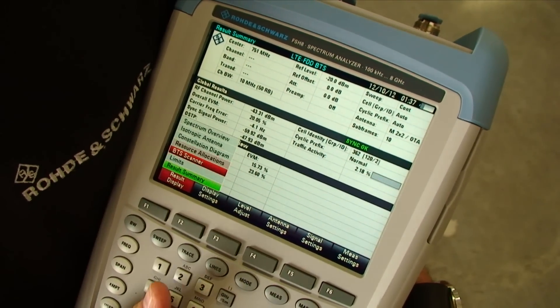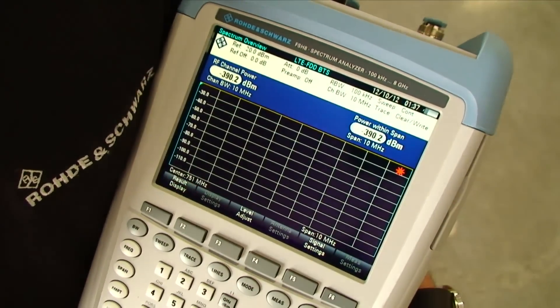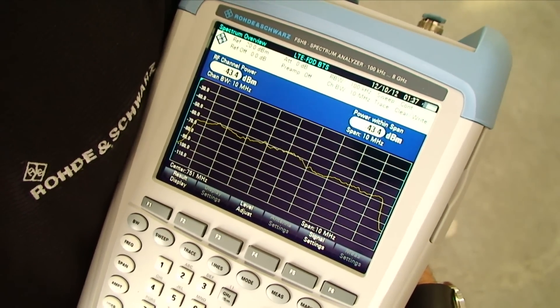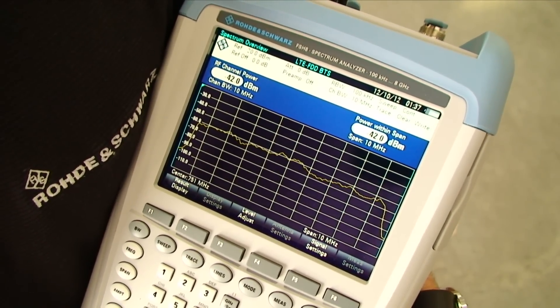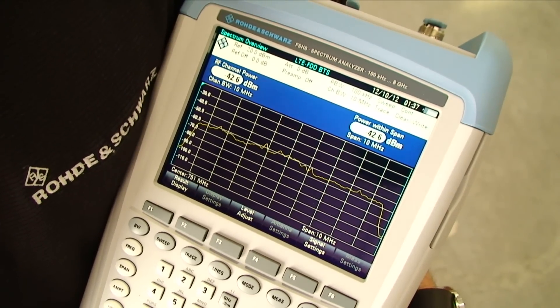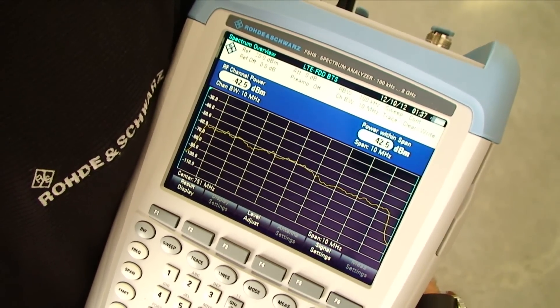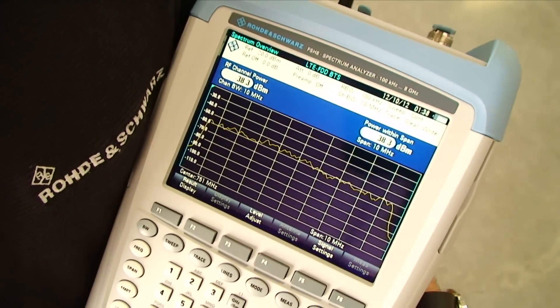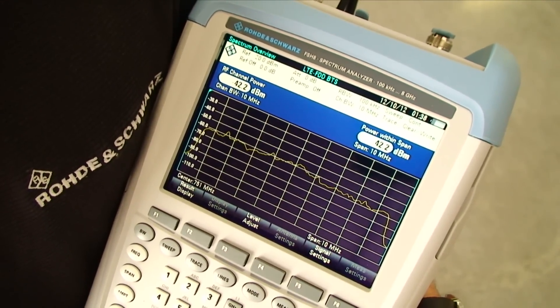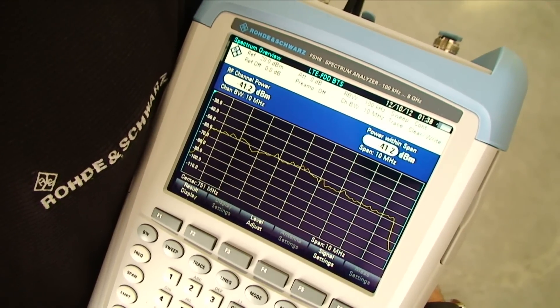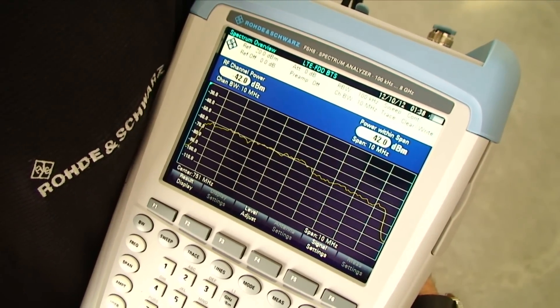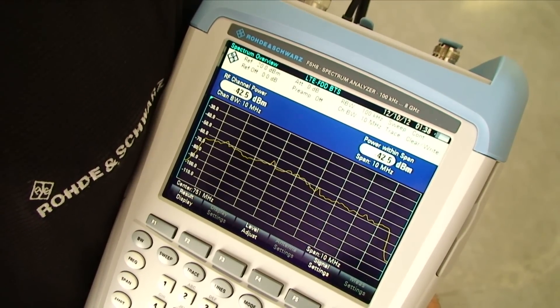I'll show some other result displays such as the spectrum overview. This one's nice to have because this is the equivalent of switching the FSH over to the spectrum mode, but this is actually built into the demodulation part of the instrument. As you can see on the screen, we can have a visual representation of the LTE bar's head, as well as some onboard measurements such as RF channel power and power within the span.